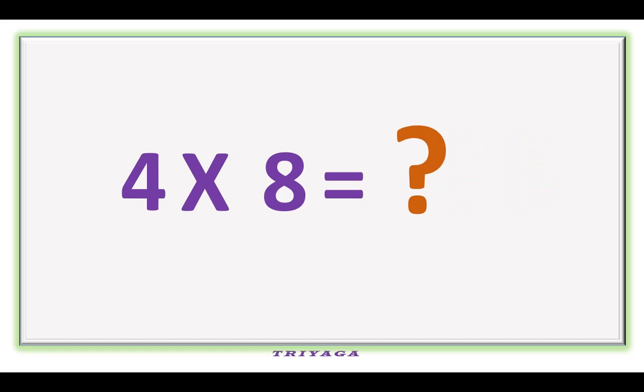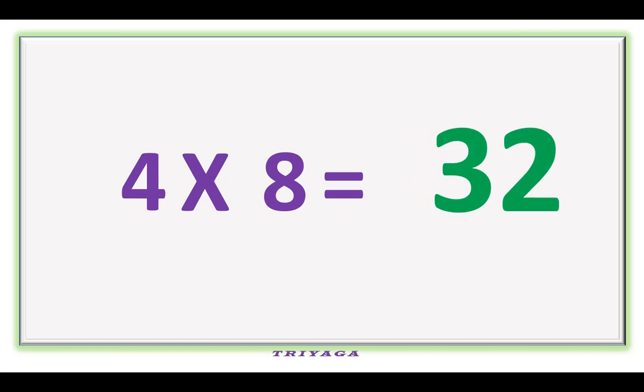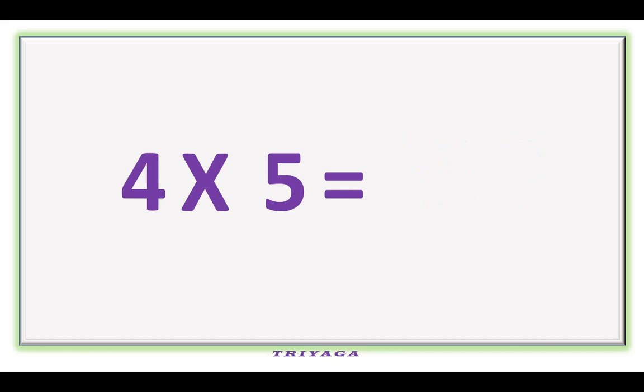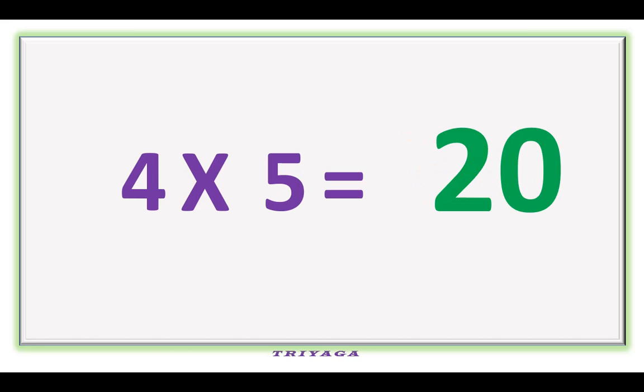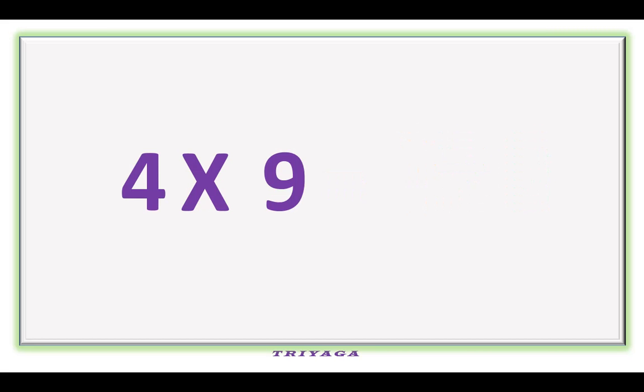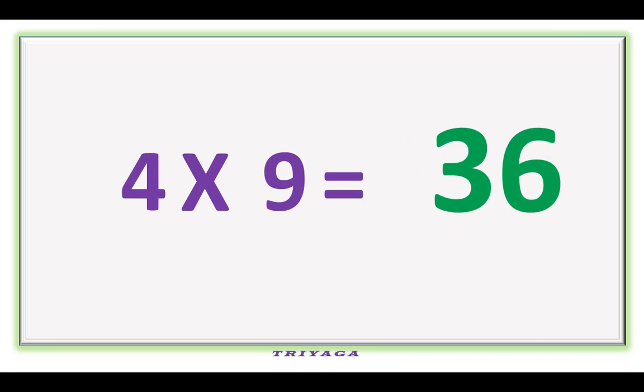4 times 8 is how much? It is 32. 4 times 5 is how much? It is 20. 4 times 9 is how much? It is 36.